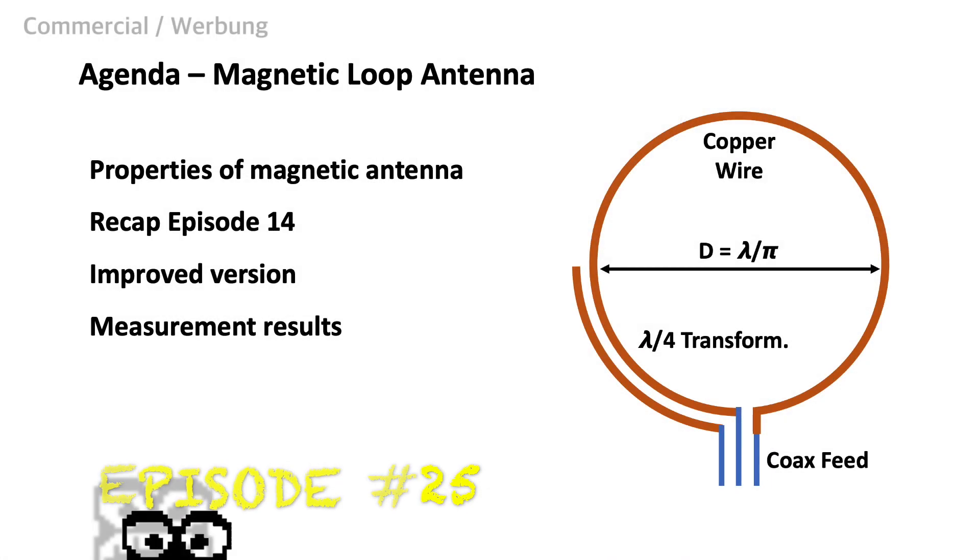This video is an extra episode. We will talk about the properties of magnetic antennas and why these are advantages for our LoRa projects. I will briefly recap episode number 14 and explain why the results were promising. Next, I will introduce an improved version of the magnetic loop antenna. After that, I will explain the principle and the measurement results of the improved version.